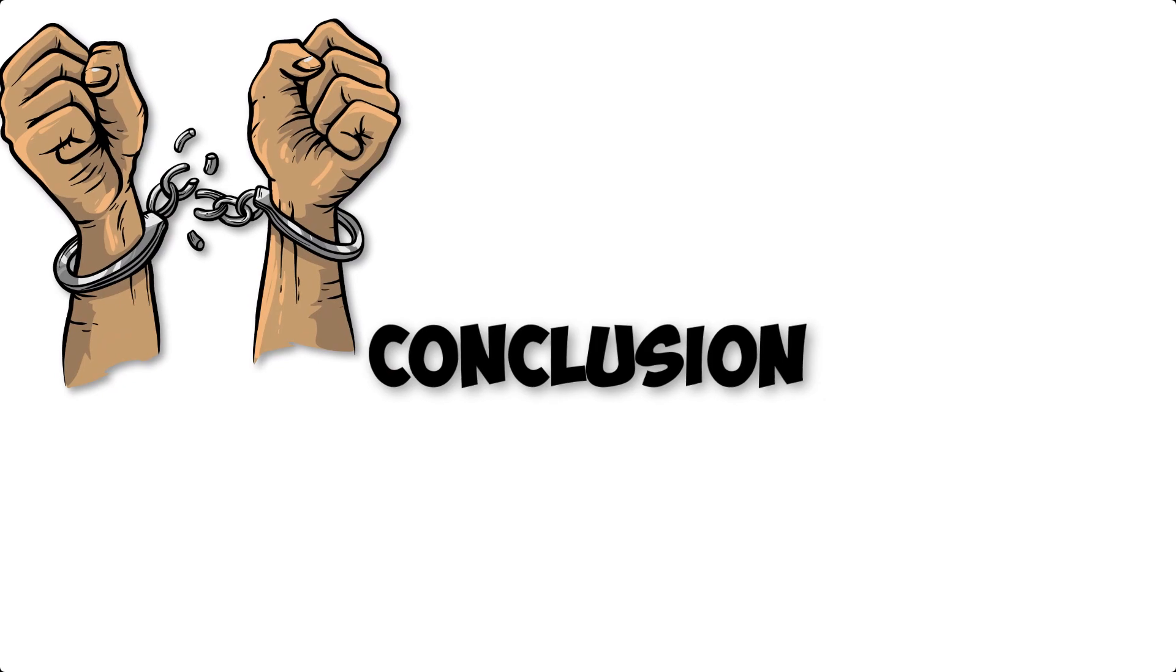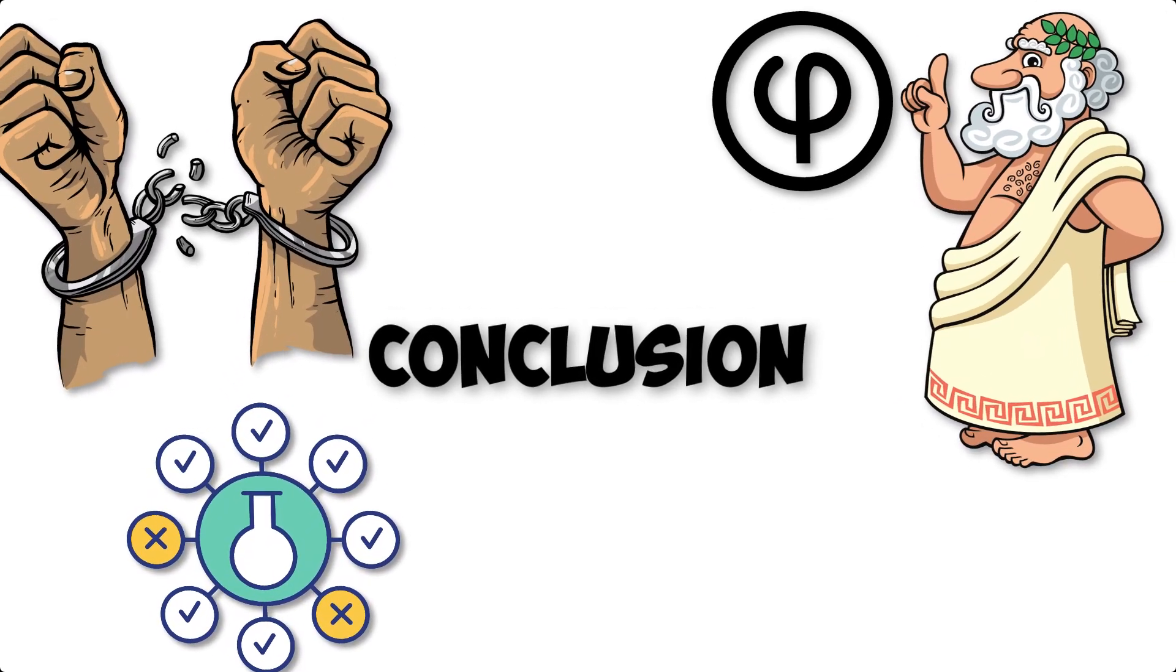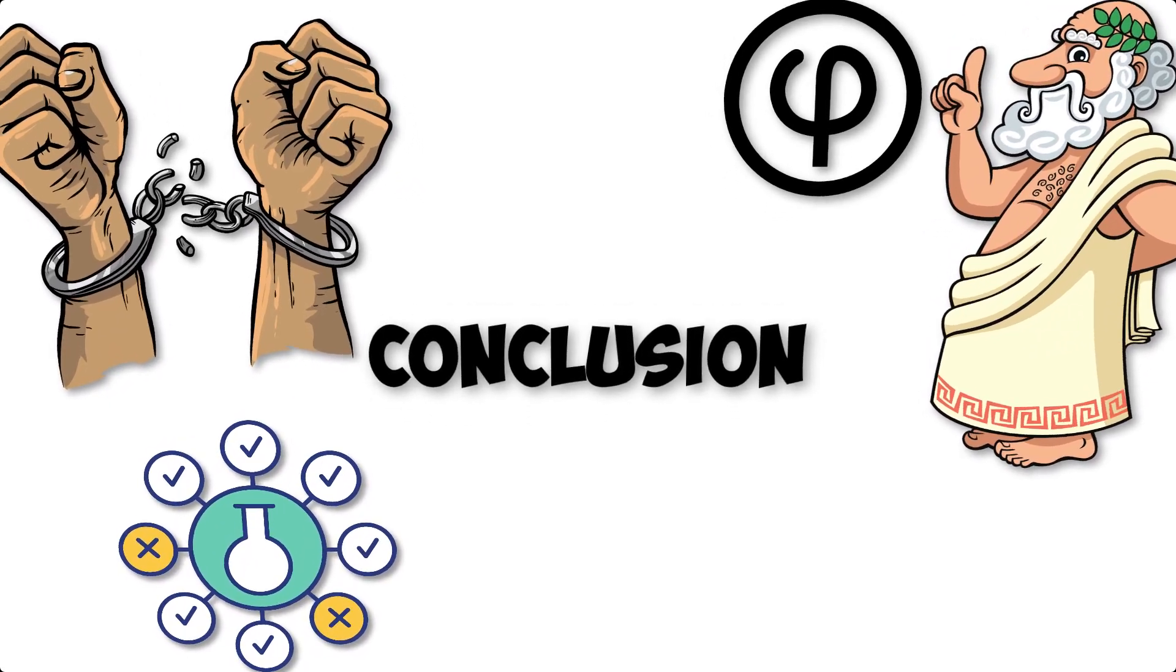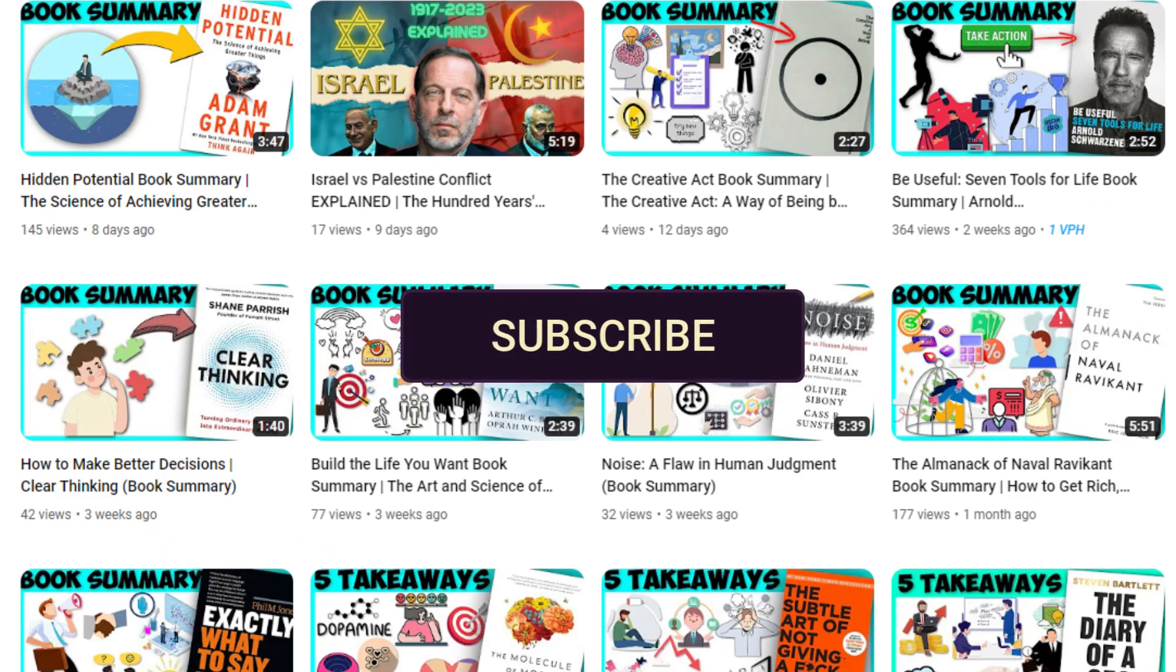In conclusion, Sapolsky's Determined provides a comprehensive and thought-provoking examination of the nature of free will. His masterful blend of scientific rigor and philosophical insight challenges our conventional understanding of human agency and offers a profound reframing of our place in the world. Subscribe to my channel for more book summaries.